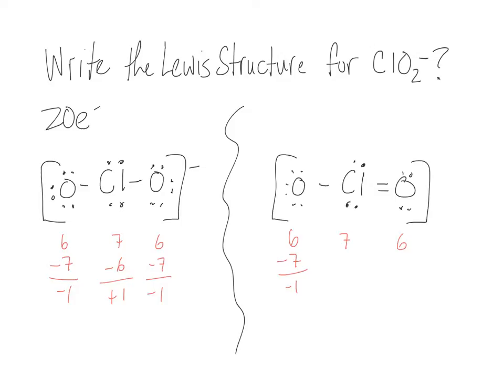So we end up with negative one with the oxygen on the left, zero for the chlorine in the middle, and then a zero for the oxygen on the right. And that seems kind of weird until you remember that this is probably an example of a resonance structure.